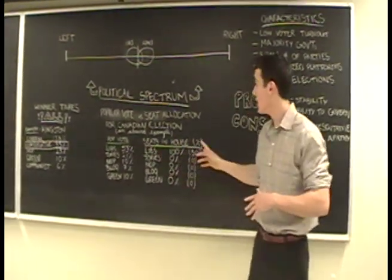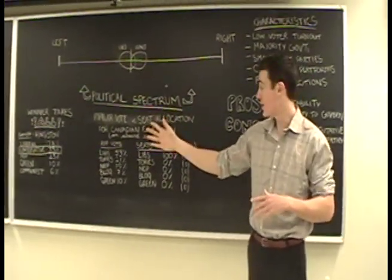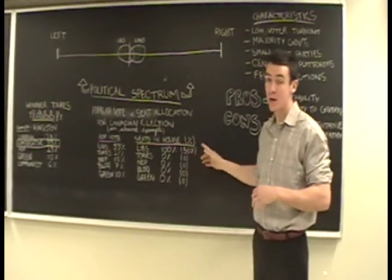Despite that, if they somehow managed to win every single one of those individual contests, they could still end up with 100% of the seats in the House. So, all 308 and can control the House absolutely.